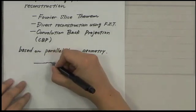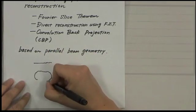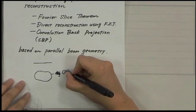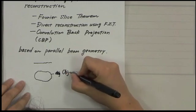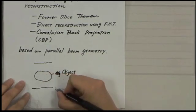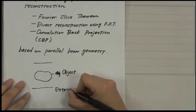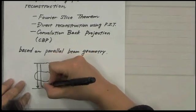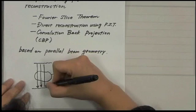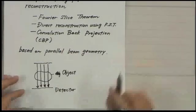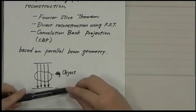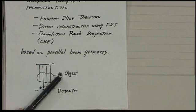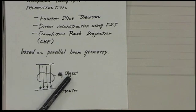So there's some object, and this is a detector. And parallel beam is basically just beams are parallel. And then we acquire the data on this detector. And then we just change the angle and we keep collecting the data.